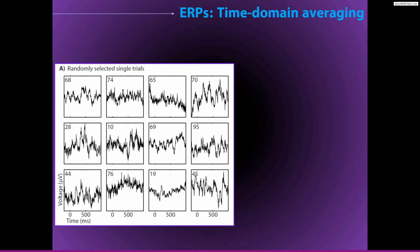Here we have single trial EEG data plotted from 12 randomly selected trials. The number in the upper left of each plot indicates the trial number, and these all come from the same channel.